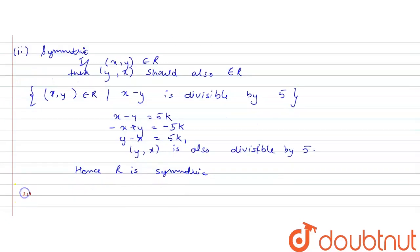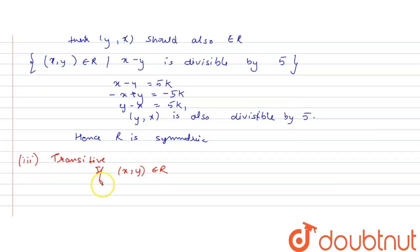Now, third one is transitive. For a relation to be transitive, if (x,y) belongs to R and (y,z) belongs to R, then (x,z) should also belong to R.